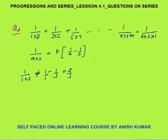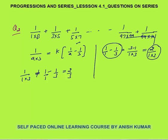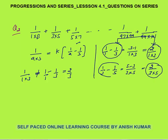I need to break this into the form 1/A − 1/B. What is 1/1 − 1/3? The LCM is 1×3, giving (3−1)/(1×3) = 2/(1×3). So 2/(1×3) is the same as 1 − 1/3. Similarly, 1/3 − 1/5 = (5−3)/(3×5) = 2/(3×5), meaning 2/(3×5) equals 1/3 − 1/5.